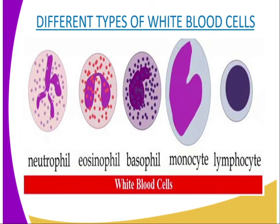As seen from our diagram, the monocytes have a large lobed nucleus and are produced in the bone marrow. They exhibit amoeboid movement and are therefore able to move to sites of infection and engulf pathogenic microorganisms. Therefore, they are phagocytic.